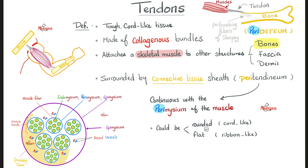What's the name of the connective tissue that invests the tendon? Peritendinium, which is a sheath. This sheath can be filled with synovial fluid. That's why we call it the synovial sheath of the tendon, which is today's topic. The peritendinium of the tendon is continuous with the periosteum of the bone.